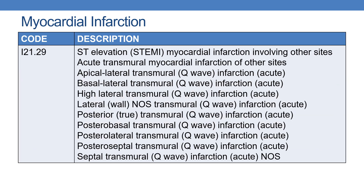The next code is I21.29 — ST elevation myocardial infarction involving other sites. Synonymous terms include: acute transmural myocardial infarction of other sites, apical-lateral transmural infarction, basal-lateral transmural infarction, high lateral transmural infarction, lateral wall NOS transmural infarction, posterolateral transmural infarction, and septal transmural infarction. Whenever any of these terms appear, code I21.29.